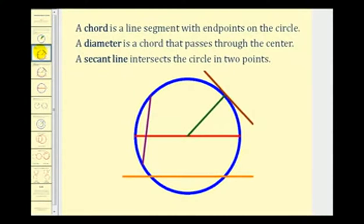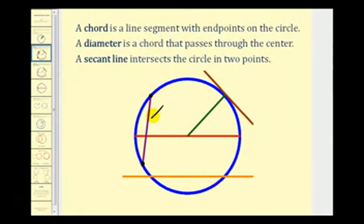Now let's define several other key features of a circle. A chord is a line segment with both endpoints on the circle. Notice how this purple segment has both endpoints on the circle, and therefore this is a chord.